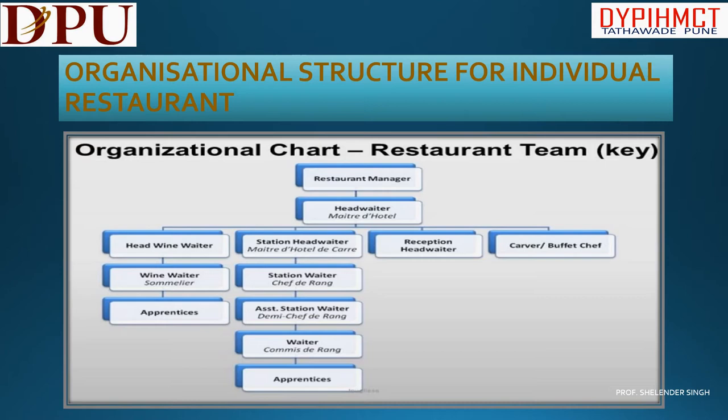Reception Head Waiter is also termed as Hostess. Then Buffet Chef, Wine Waiter also called in French Sommelier, Station Waiter also called in French Chef d'Range, Assistant Station Waiter also called in French Dommé Chef d'Range, Waiter in French called Commé d'Range, and Apprentices. All of the above are different roles which work in any operational restaurant.